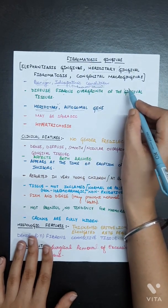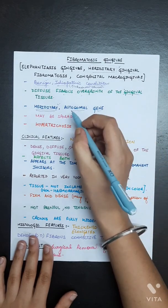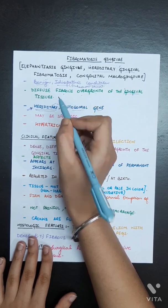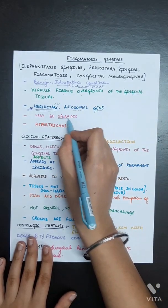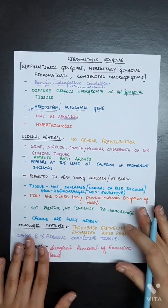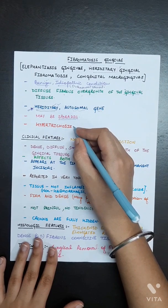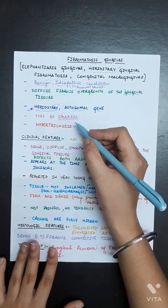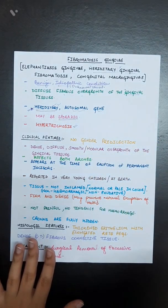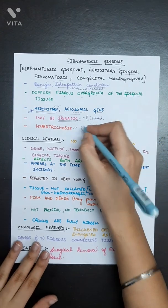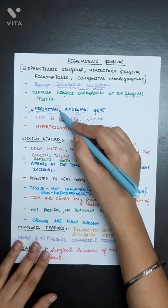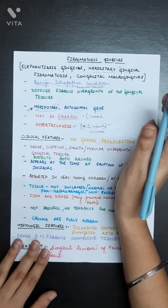It is mainly hereditary, but in some conditions it can be sporadic also. There is hypertrichosis associated with this disease. Hypertrichosis means increase in the number of hair. It can be hereditary or sporadic, this condition.